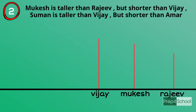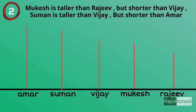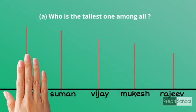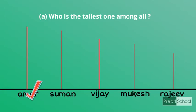Taking the next sentence: Suman is taller than Vijay, so Suman has more height than Vijay. And Suman is shorter than Amar, so Amar has more height than Suman. For the first question — who is the tallest? — from the diagram, Amar is the tallest one among all.